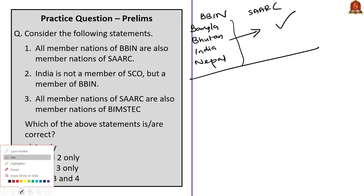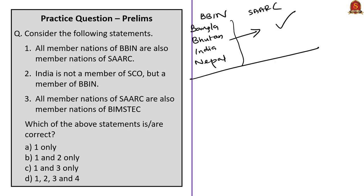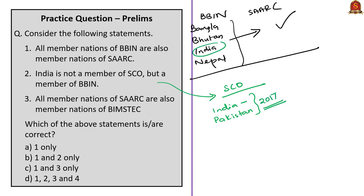The second statement says India is not a member of SCO — Shanghai Cooperation Organization — but it is a member of BBIN. We studied that India is indeed a member of the Shanghai Cooperation Organization, and both India and Pakistan became members in the year 2017. So the first part of the second statement is wrong, and therefore the entire second statement is wrong.